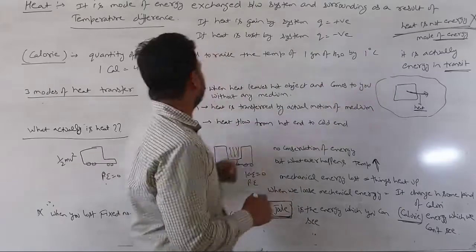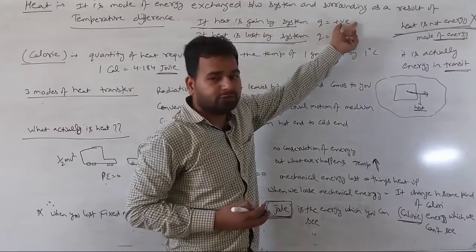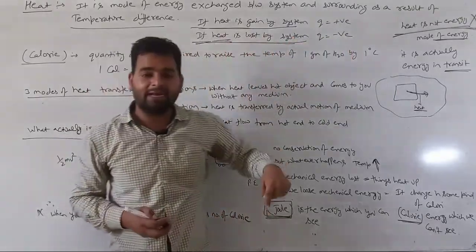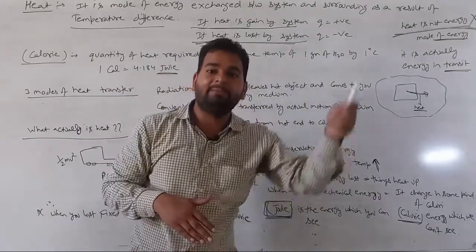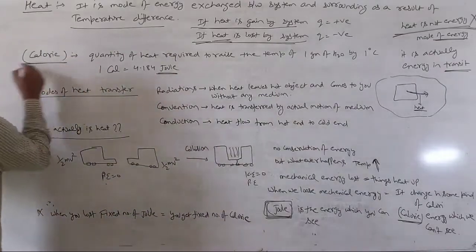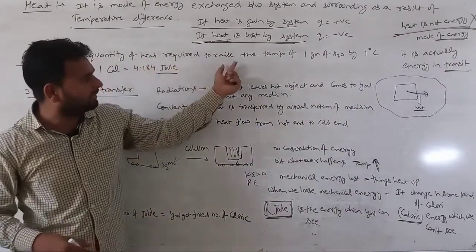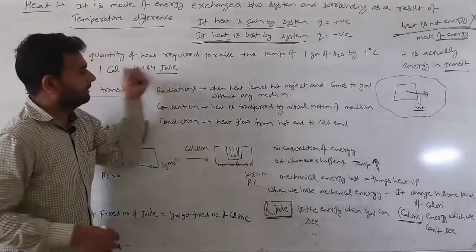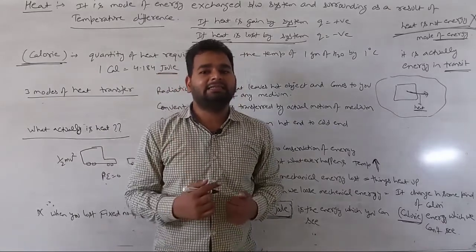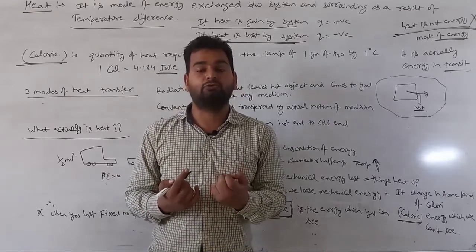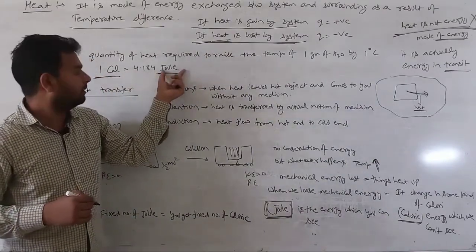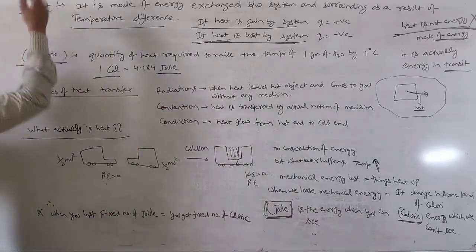For sign convention: if heat is gained by the system, Q is positive. If heat is lost by the system, Q is negative. A system loses heat when its temperature is higher than the surroundings, and gains heat when the surroundings temperature is higher. One calorie is defined as the quantity of heat required to raise the temperature of one gram of water by one degree Celsius. One calorie equals 4.184 Joules.